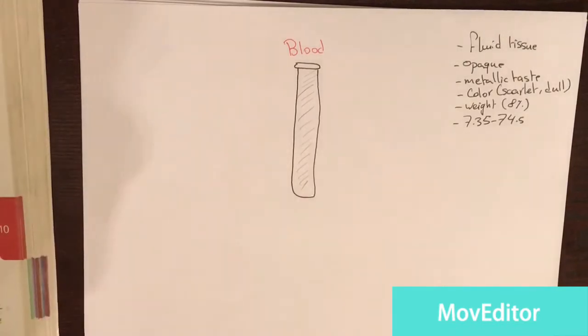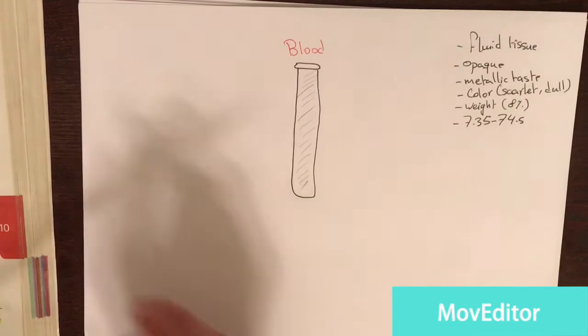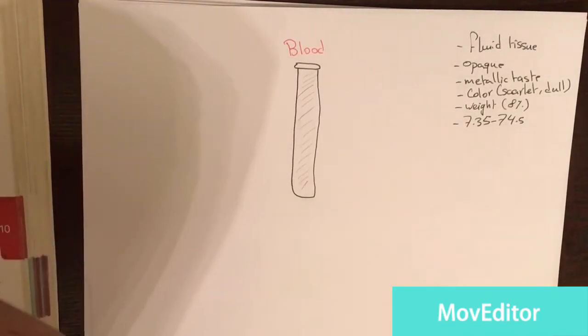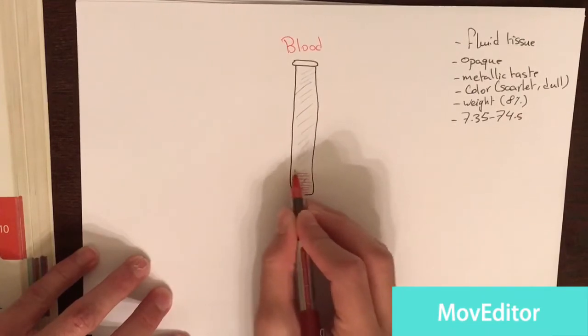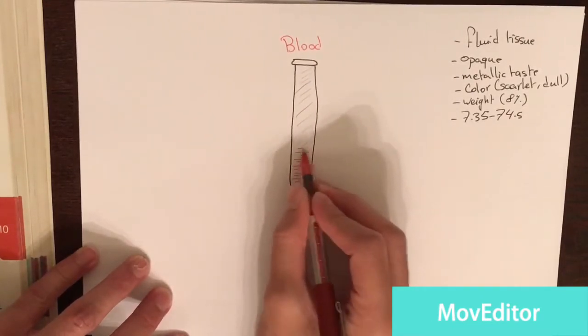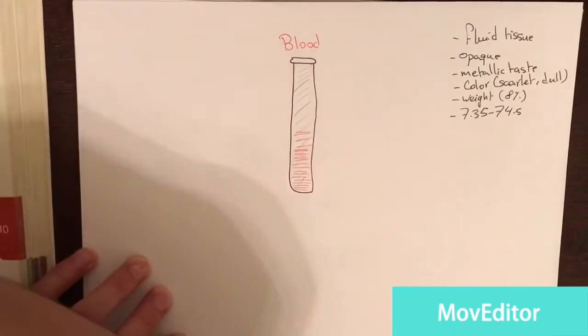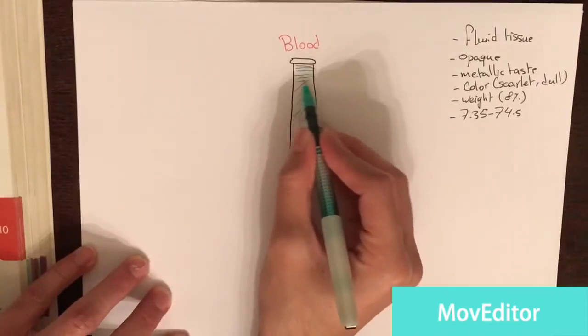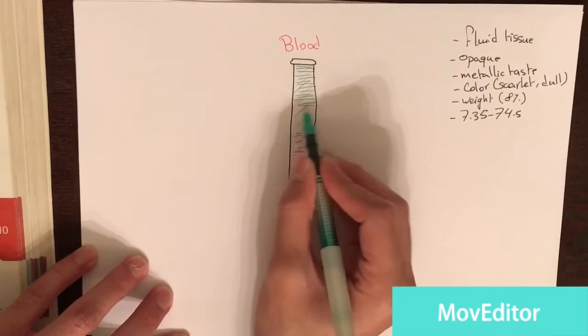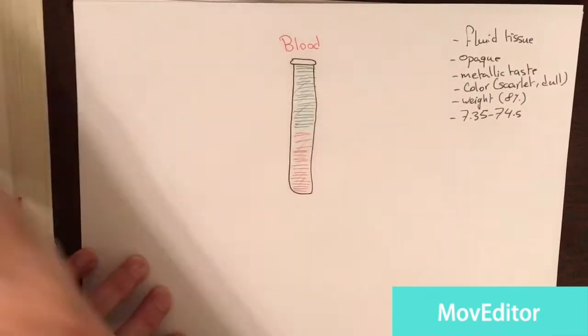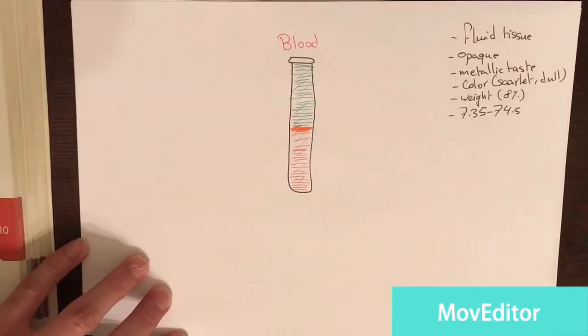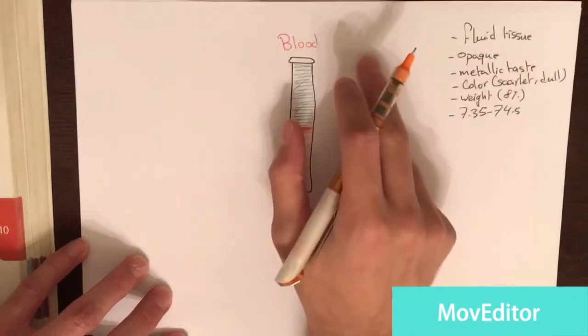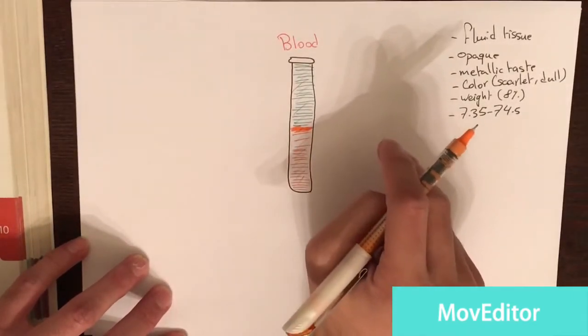The centrifuge will start spinning those tubes really fast. What will happen is you will have some molecules going down and then you will have some molecules floating upward. And then you will have a thin line between the two. What this will tell us is that blood is formed of solid particles and liquid.